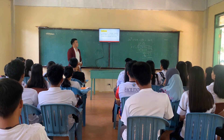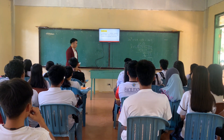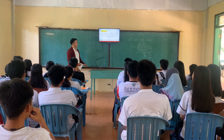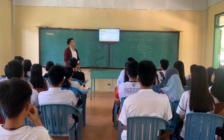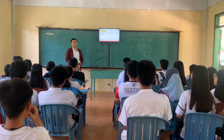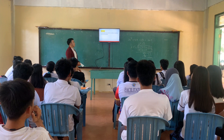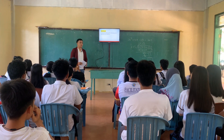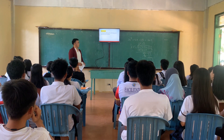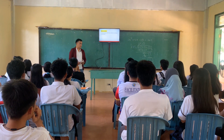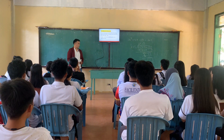Coefficient: a number or constant quantity placed before and multiplying the variable in an algebraic expression. Dividend: a number to be divided by another number. Divisor: a number by which another number is to be divided. Quotient: a result obtained by dividing one quantity by another. Remainder: an amount left over after dividing a number.